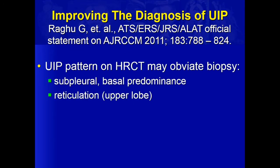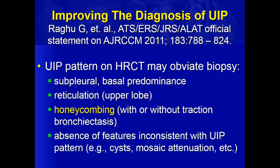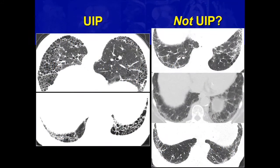Subpleural basal predominance, reticulation in the upper lobes, and honeycombing. Interestingly, in the ATS consensus criteria, they say honeycombing with or without traction bronchiectasis — which is itself an odd statement, to expect to see honeycombing without traction bronchiectasis. You should also note that there would be features inconsistent with the diagnosis of UIP, and those features should be absent. I'll expand on how UIP cases should be reported a little bit further on.